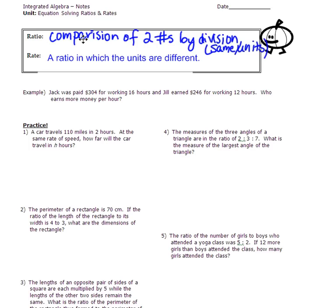So this is actually a rate and it's dollars per hour. We have $304 for 16 hours and $246 for 12 hours. I think Jill earns more money because we get $19 for the first one and we get $20.50 for the second one. So Jill is the winner. Go Jill!